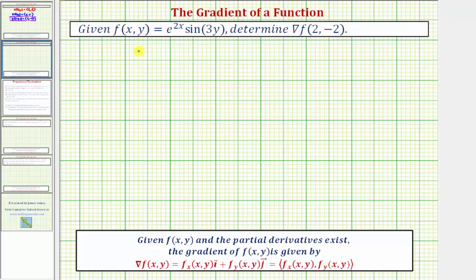We'll first find the gradient of f in terms of x and y, and then we'll perform substitution to find the two-dimensional vector at the point (2, -2). So we need to find the partial of f with respect to x, then the partial of f with respect to y.